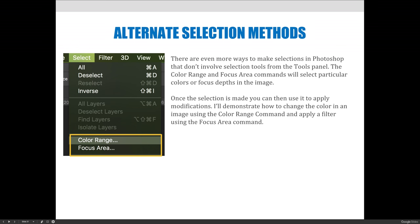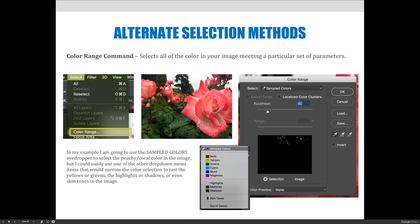In the newest version of Adobe Photoshop CC — the one I'm currently using in September 2017 — the Focus Area command has been reformed to be light years more impressive than it has been in the past. The first option is the Color Range command. If you go to the Select menu you can choose Color Range, and it selects all the color in your image meeting a particular set of parameters. Your parameters could be selecting all the red, all the yellow, or all the green in the image.